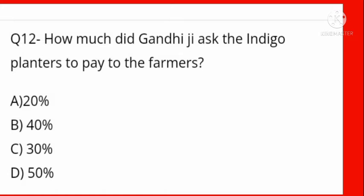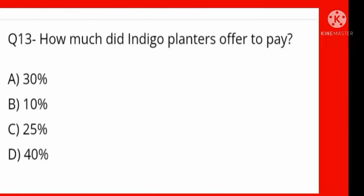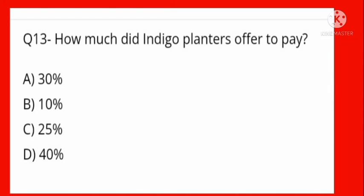How did Gandhi Ji ask the Indigo planters to pay the farmer? Options: 20%, 40%, 30%, 50%. He asked for 50%. How much did Indigo planters offer to pay? Options: 30%, 10%, 25%, 40%. Gandhi Ji demanded 50% but they got 25% — option C is correct.